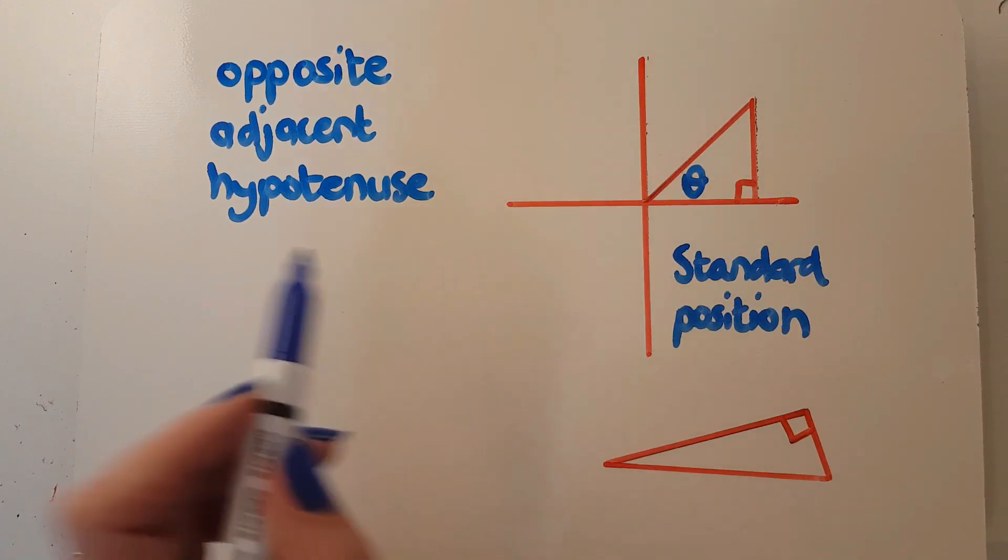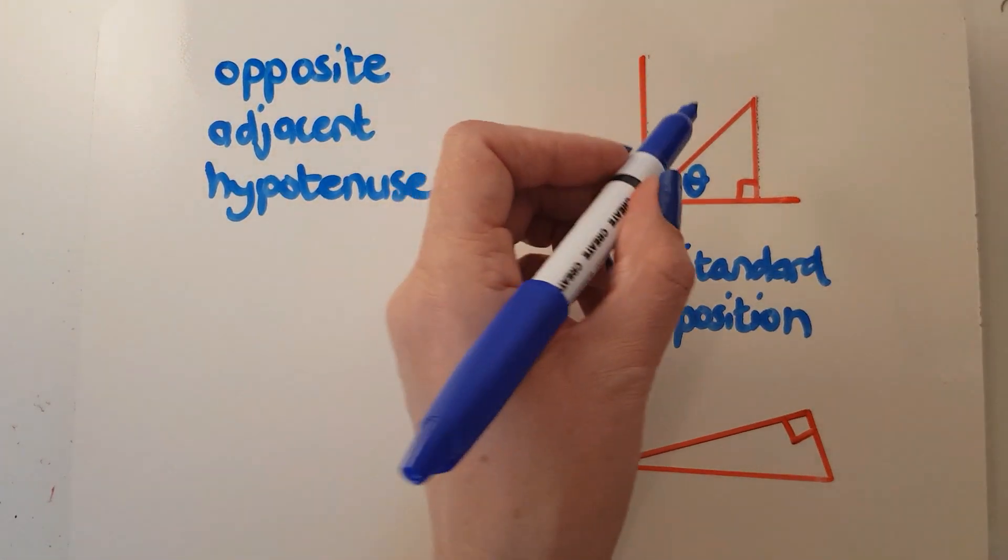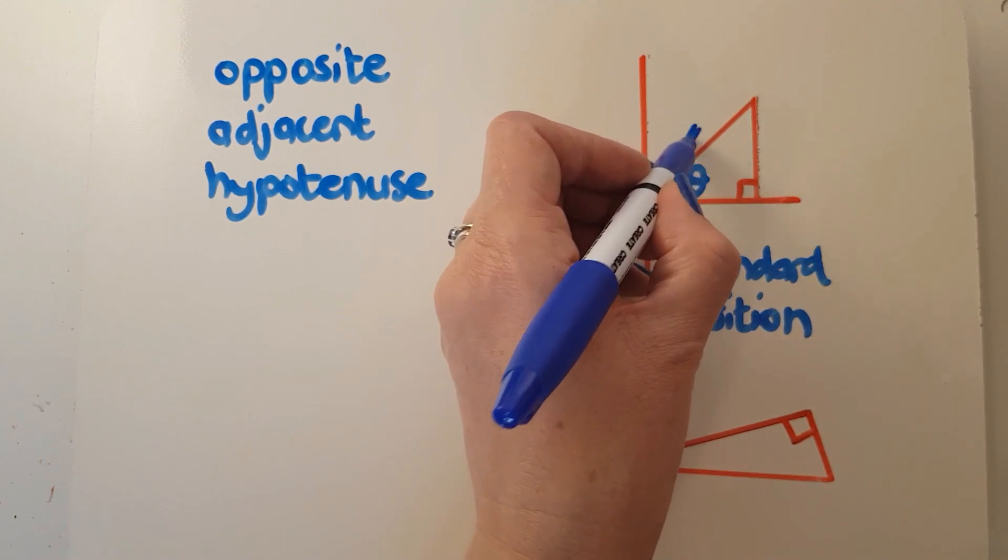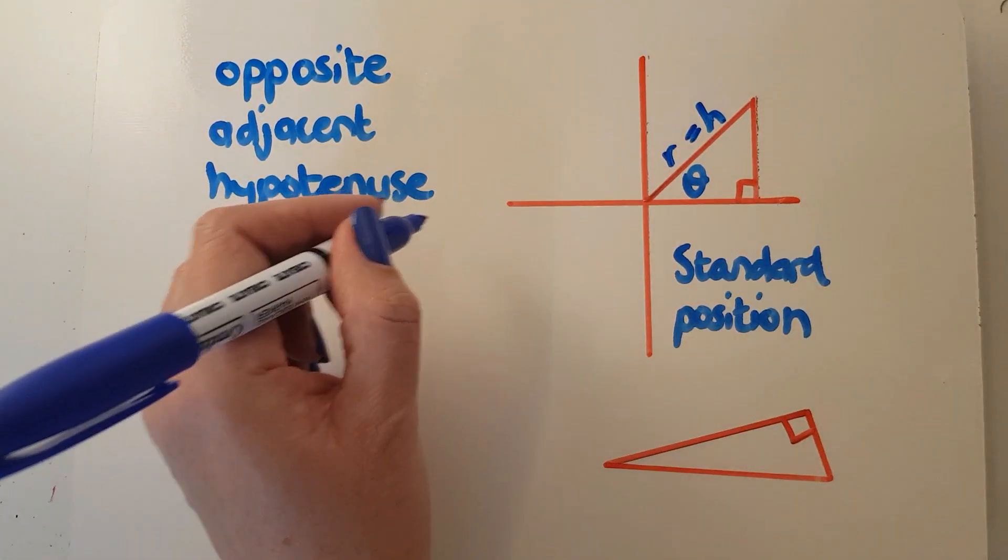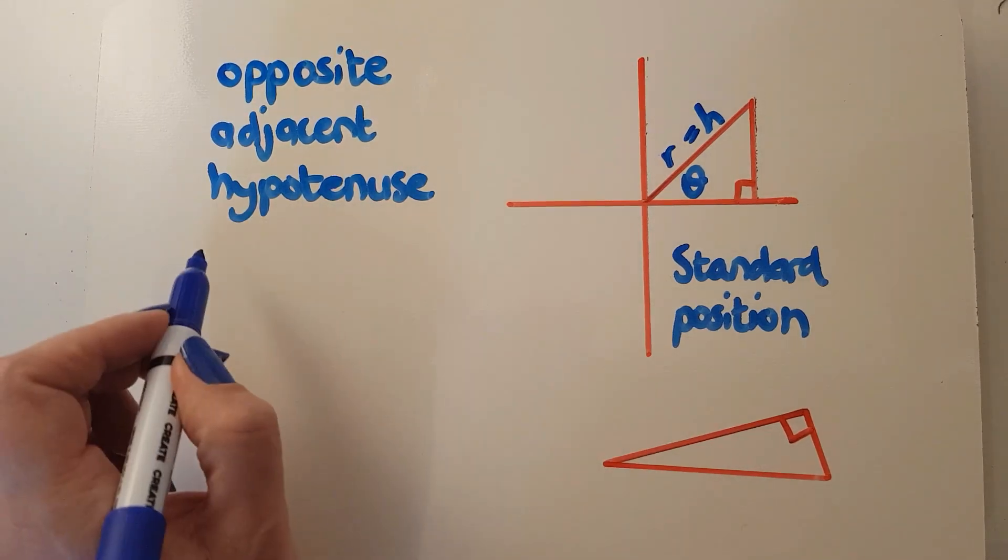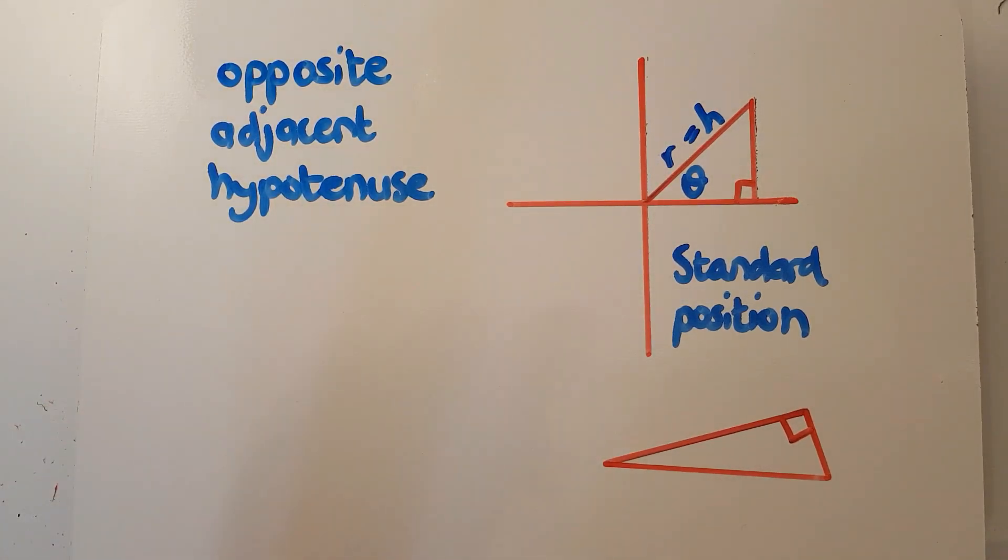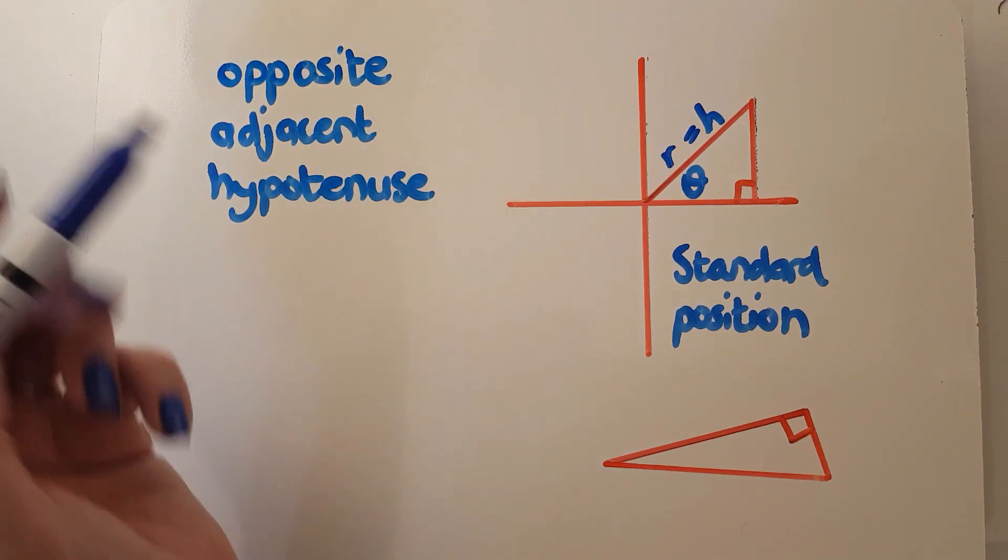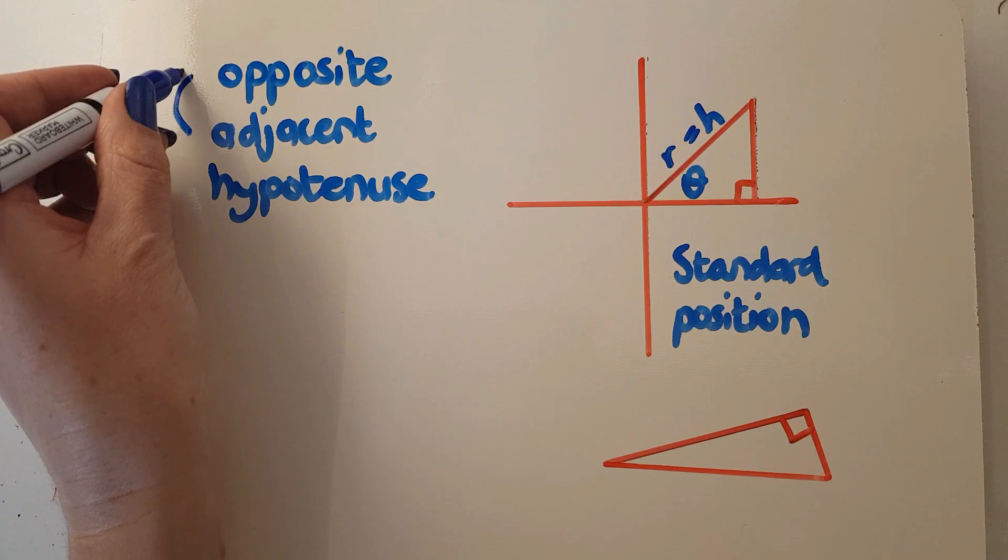So obviously my hypotenuse is going to be my r. So I'm going to put here r equals h, the hypotenuse. So where we had sin, cos, and tan with x, y, and r last time, we now have opposite-adjacent-hypotenuse, but these guys are interchangeable.